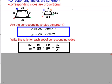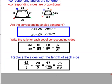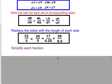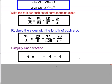We now know the ratios that we want to compare. Now we actually want to do the comparison. So now we want to replace the sides with the actual lengths of each side. JM is 12, UR is 3, ML is 20, RS is 5, LK is 17, ST is 4.25, JK is 26, and UT is 6.5. We now have our ratio set up. What we need to do next is just simplify each fraction. In other words, divide them out. 12 divided by 3 is 4, 20 divided by 5 is 4, 17 divided by 4.25 is 4, and 26 divided by 6.5 is 4.